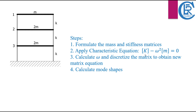Step 2: Apply the characteristic equation, represented as k minus omega squared times m equals zero. This equation plays a pivotal role in determining the natural frequencies and corresponding mode shapes. Step 3: Calculate the natural frequency omega and discretize the matrix, yielding a new matrix equation. Step 4: With the groundwork laid, we can now proceed to calculate the mode shapes, which provide insights into how the structure vibrates at different frequencies.